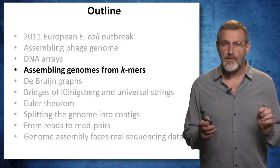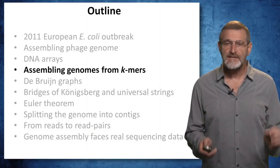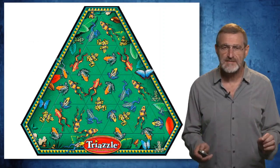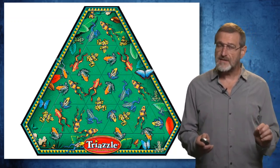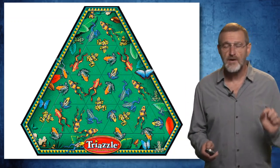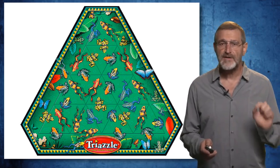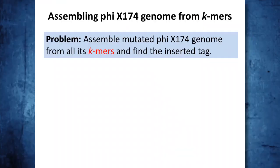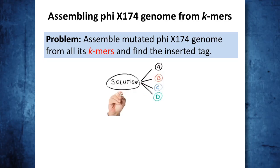We will now discuss the problem of assembling a genome from its k-mer composition. This is a puzzle with just 16 pieces. However, it is very complex — harder than you think. It may set you back for many hours because it is a highly repetitive puzzle. Every frog in this puzzle is repeated multiple times. When you try to assemble the phage genome from its k-mers, there is a similar complication: if k is small, some k-mers will be repeated. As a result, there may be multiple solutions to the problem.